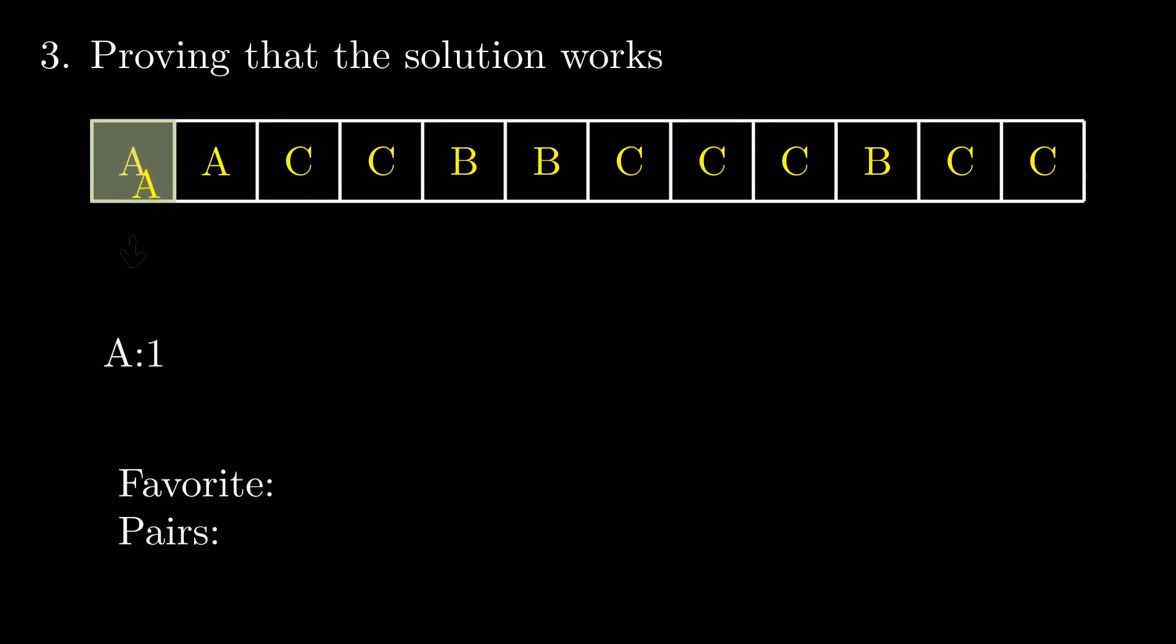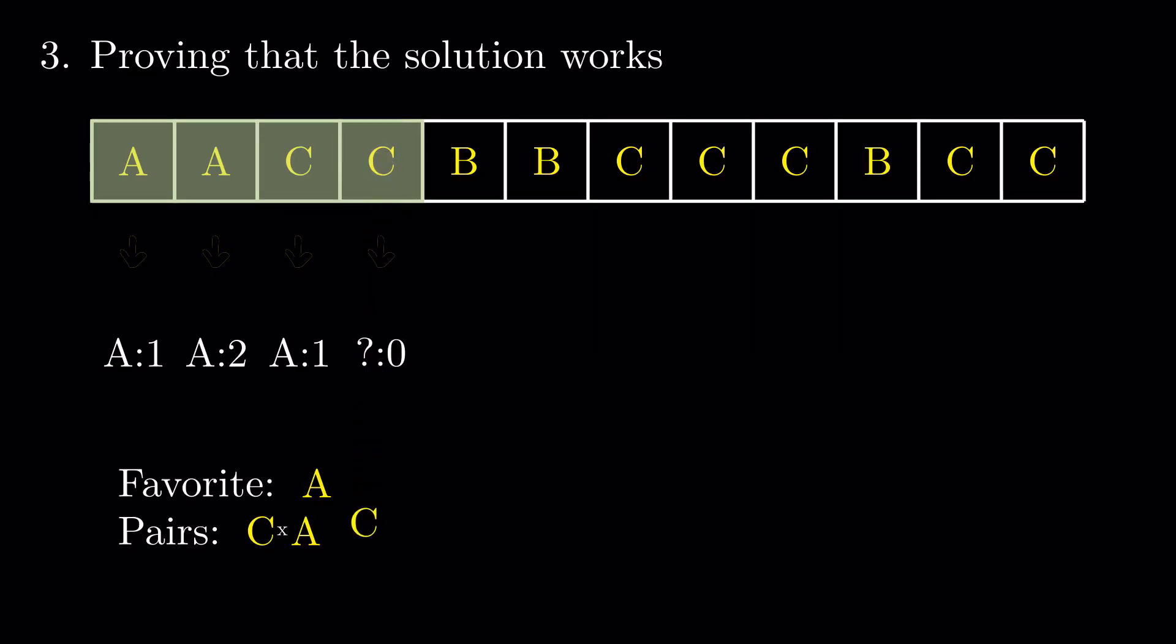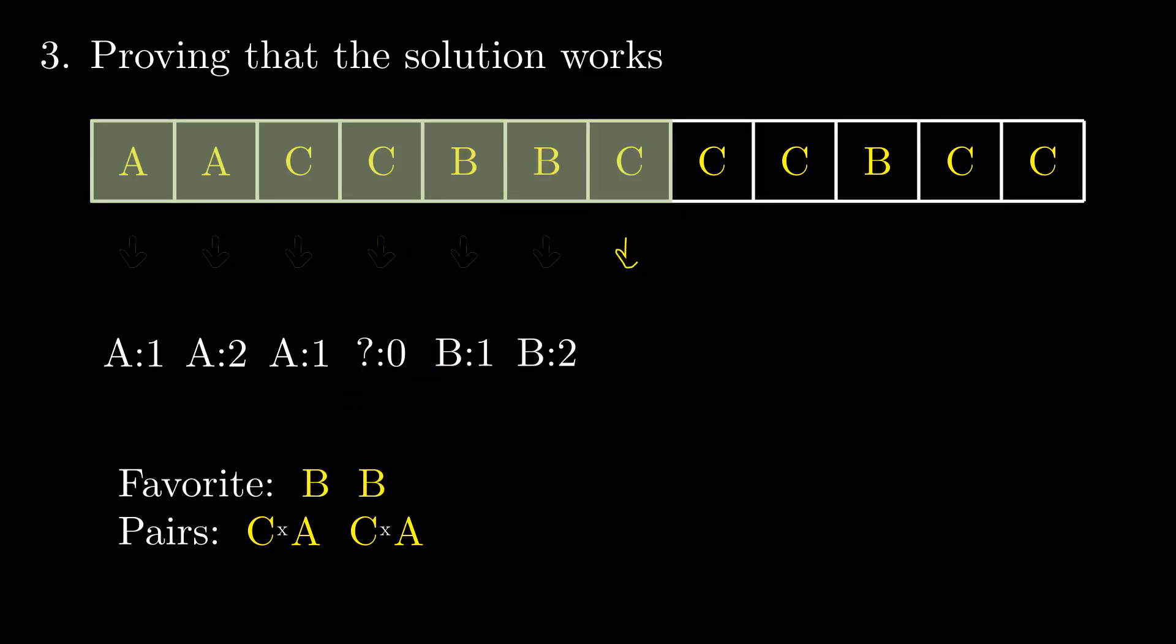One group with all the elements equal to the current favorite, and another group with elements that can be paired in such a way that no pair has two equal elements, meaning they cancelled each other out. In this group, we can still have some elements equal to the current favorite.